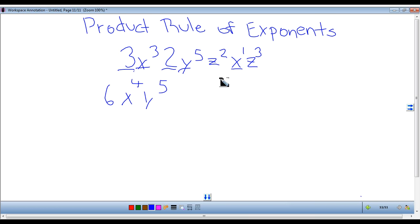You look for the next variable. Here we have a z. Look for any other z's. Here we have another one. Now you just add the 2 and the 3 and that will get you 5. And this is your final answer.